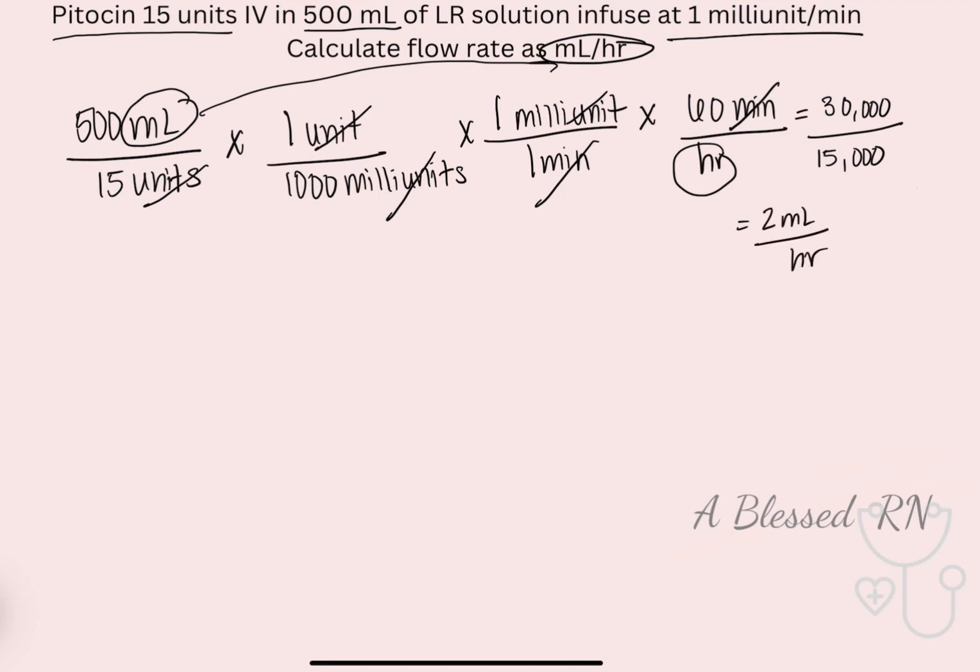For the folks in the back who don't like to use dimensional analysis, who can break down the problem other ways, let's look. So we're going to have to convert our unit of measure first. So going from 15 units to milliunits, you're going from might to slight, three spaces to your right.